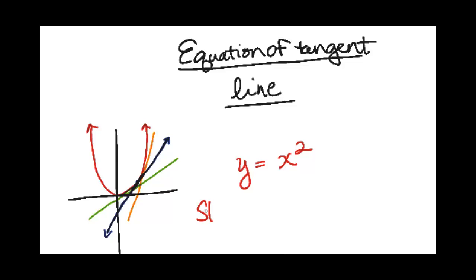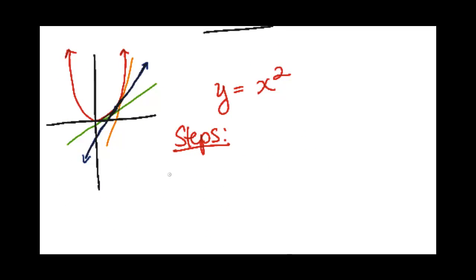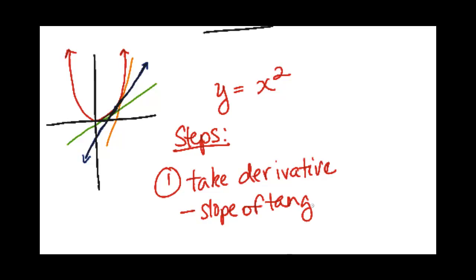What are the steps? Step one is to take the derivative of your function. What this does is it will give you the slope of the tangent line.